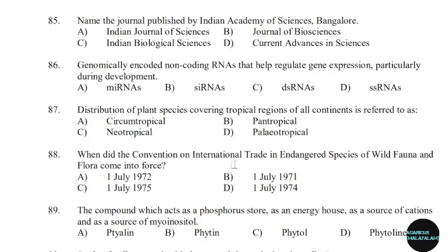85th question: Name the journal published by the Indian Academy of Sciences, Bangalore. Correct answer: Option B — Journal of Biosciences.